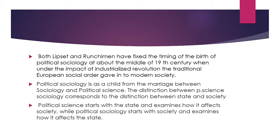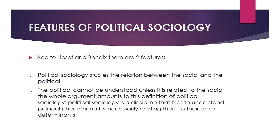Political sociology is a child from the marriage between political science and sociology. The distinction between political science and sociology corresponds to the distinction between state and society. Political science starts with the state and examines how the state affects society, while political sociology starts with society and examines how society affects the state.